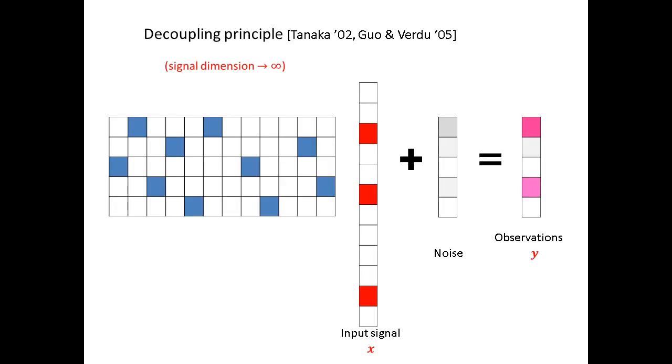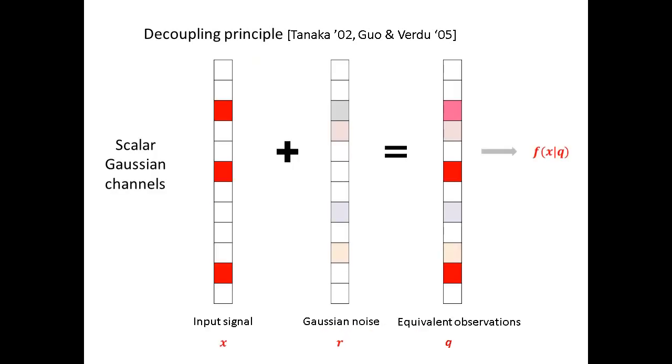How do we calculate this posterior? We utilize the decoupling principle. Recall that we're currently modeling the observations as a matrix vector product plus noise, and the decoupling principle says that in the limit of large signal dimension and large matrix, there's another model that is mathematically equivalent. The new model is a scalar model. It consists of a set of parallel Gaussian channels, and the new model is simpler than the matrix vector product model.